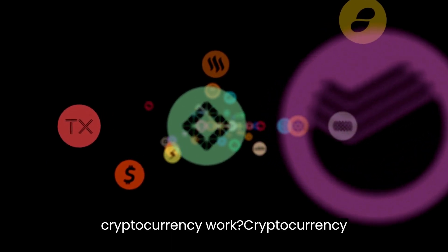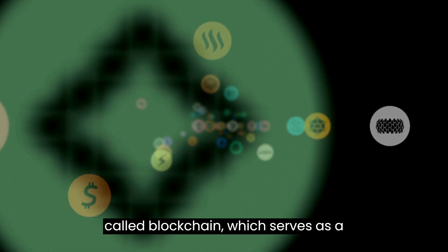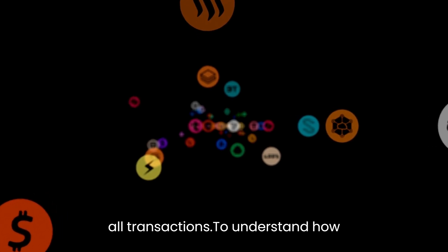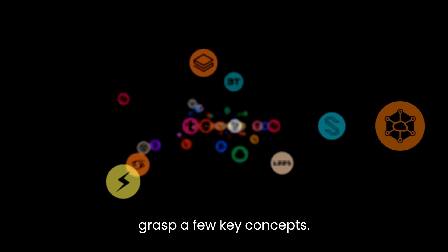How Does Cryptocurrency Work? Cryptocurrency operates on a decentralized technology called blockchain, which serves as a transparent and secure digital ledger of all transactions. To understand how cryptocurrency works, it's essential to grasp a few key concepts.